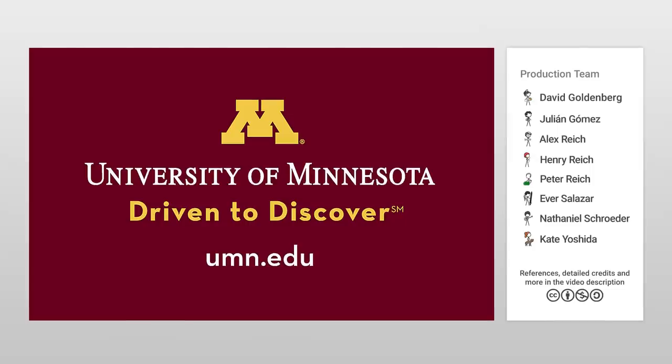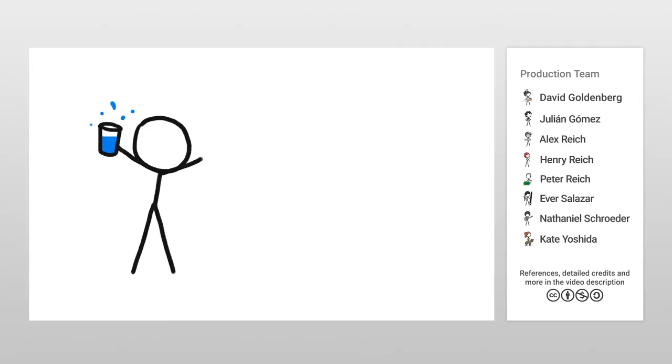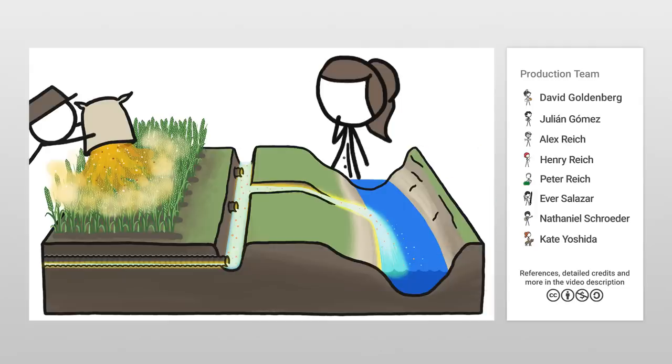This video was sponsored by the University of Minnesota, where students, faculty, and staff across all fields of study are working to solve the grand challenges facing society. One of these challenges is assuring clean water and sustainable ecosystems. And part of the solution is to reduce the amount of pollution from agricultural runoff.